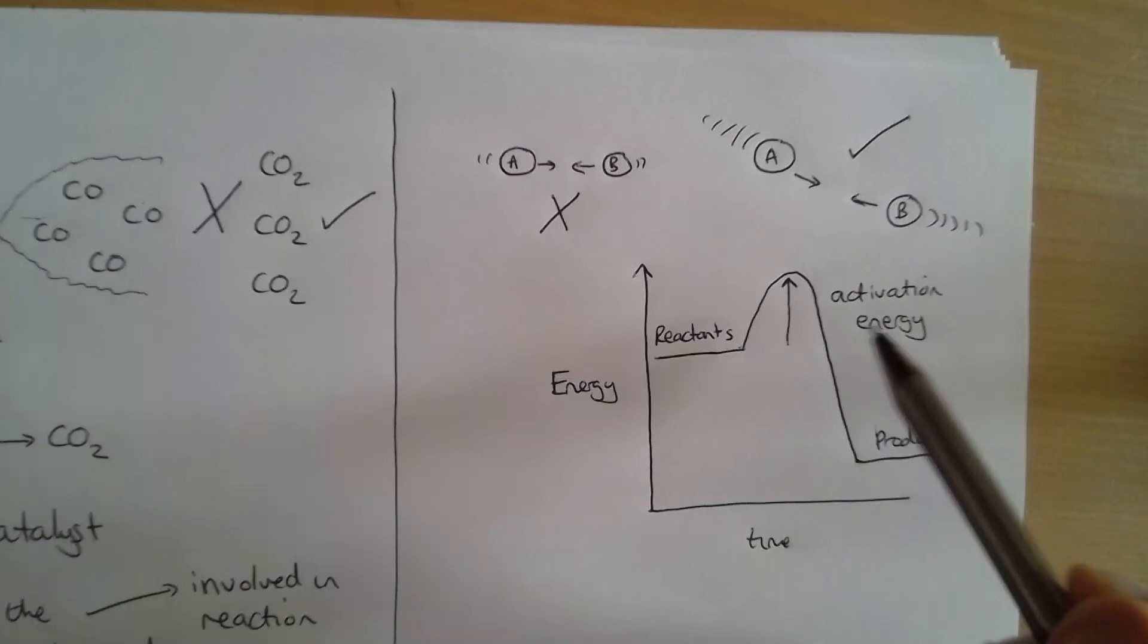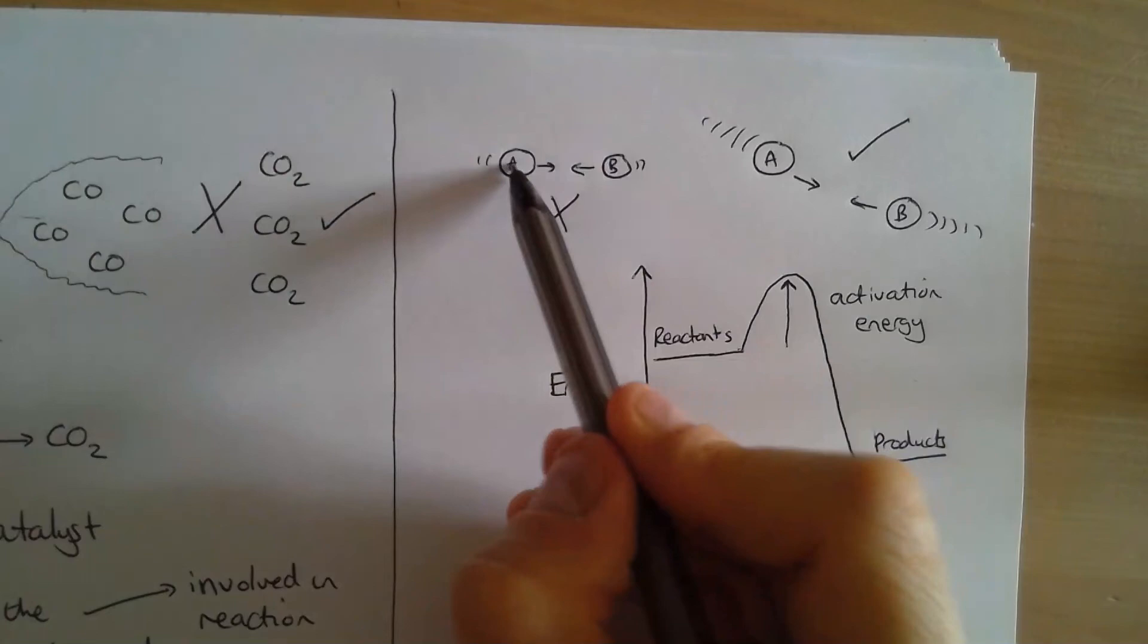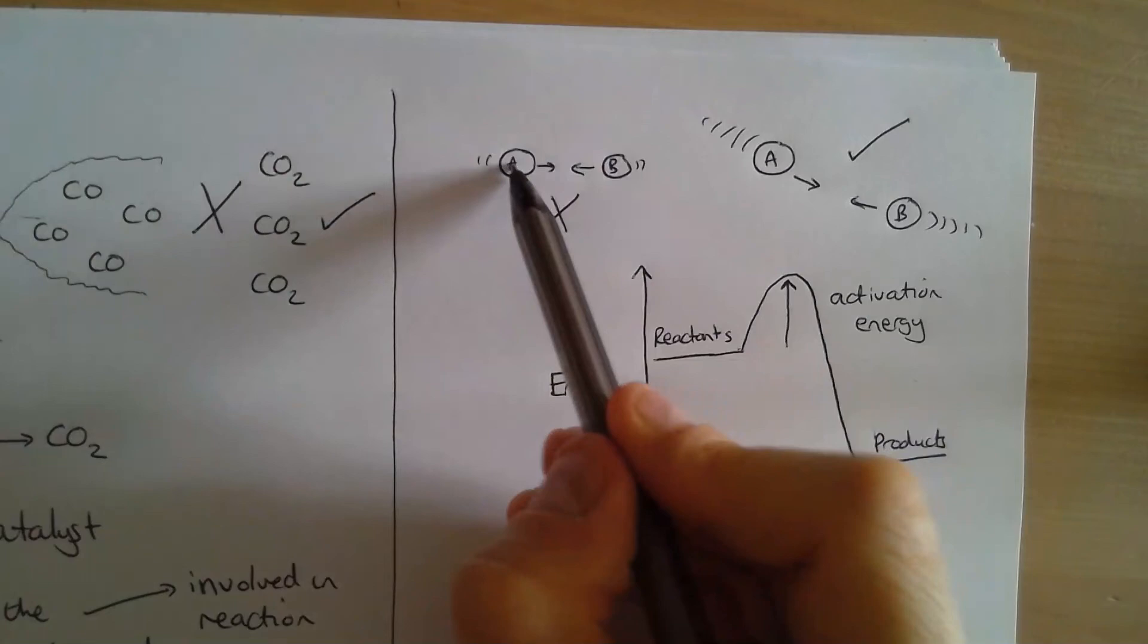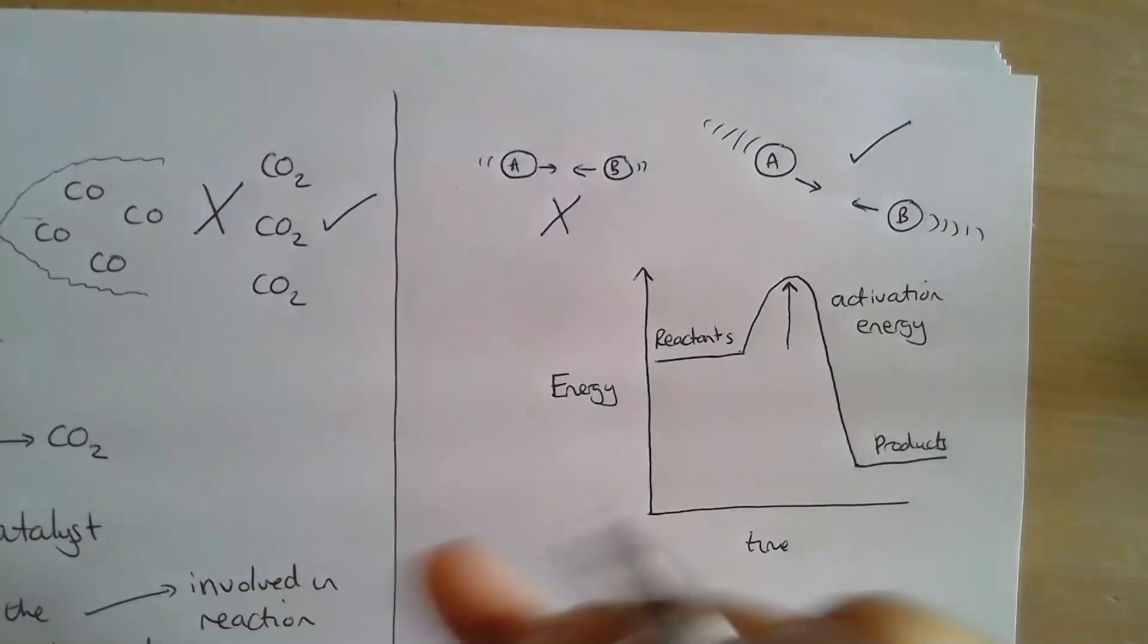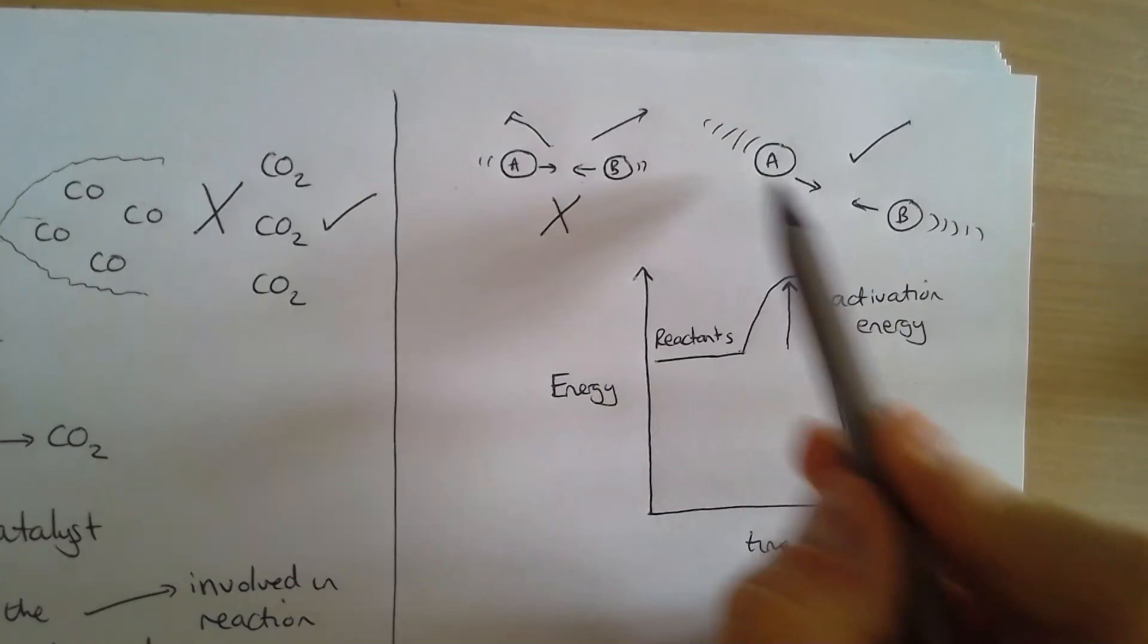So A and B which don't have much energy in this first example, because they're moving quite slowly, they don't have the energy to overcome the activation energy. So they collide with each other and just bounce off, and no reaction takes place. Whereas this example of A and B have lots of energy. They're moving fast towards each other. When they hit each other, a reaction does take place and products are produced. Now what a catalyst does is lower the activation energy needed for the reaction.